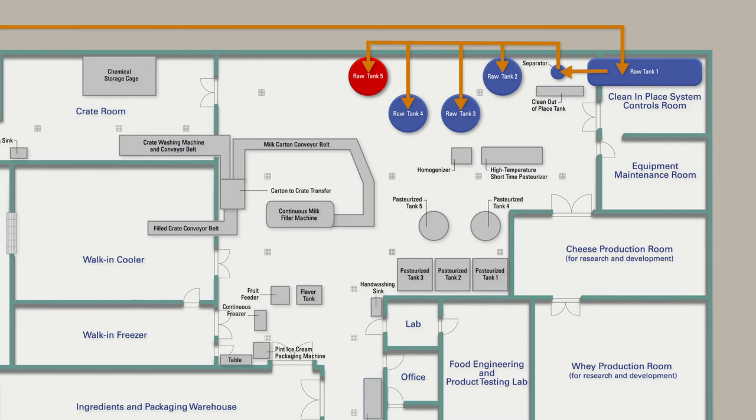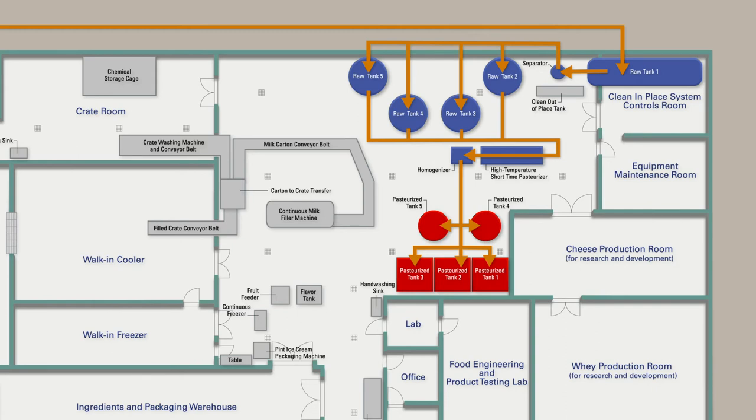Raw Tank 5 is for chocolate. All raw products then pass through the High Temperature Short Time, or HTST unit, where pasteurization and homogenization occur. After the milk has been pasteurized, it exits the HTST unit and flows into Pasteurized Tanks 1 through 5.